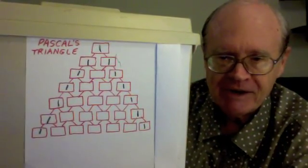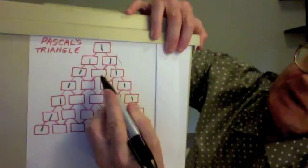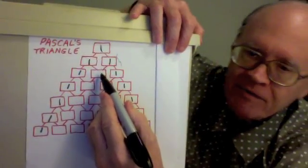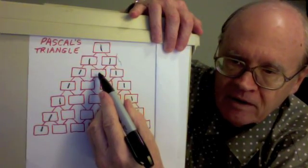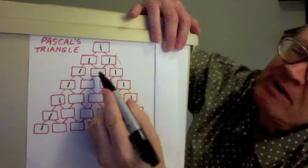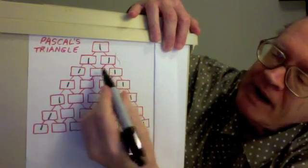Now we have to consider interior boxes. This one, how many ways are there to get from the top to this location? There are two ways, left then right, the other way, right then left.